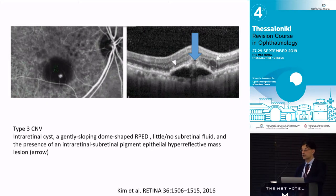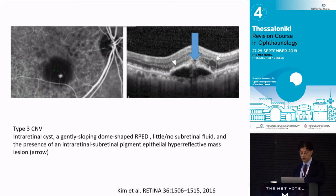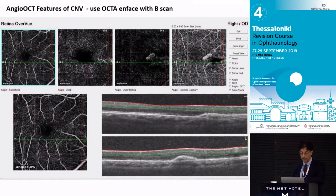ICG and OCT show the PED, the connecting stalk between the mid-retina and the PED, and the hotspot on ICG. Hotspots on ICG are non-specific — you get them in polypoidal and occult — but that combination is consistent with RAP.